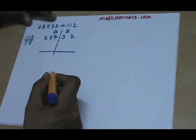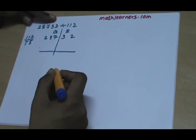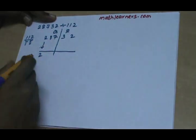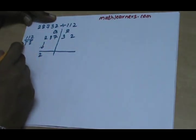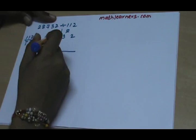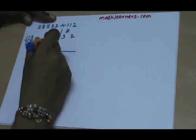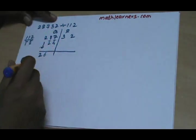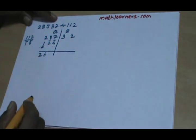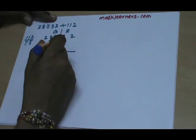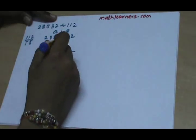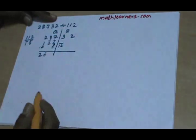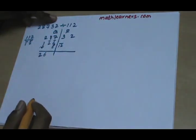Now the process will remain same as that we had seen in Nikhilam. First digit will be written as it is. 2 is individually multiplied by bar 1 and bar 2, so that will be obtained as bar 2 and bar 4. 8 minus 2 gives us 6. 6 is individually multiplied by bar 1 and bar 2 gives bar 6 and bar 12. So addition of them will give us bar 3.